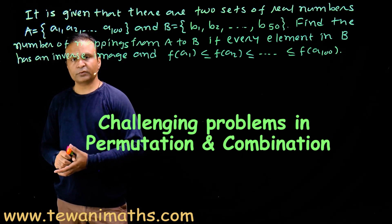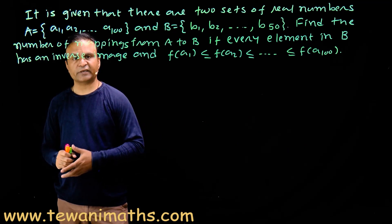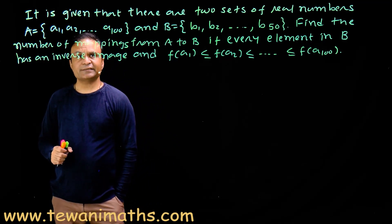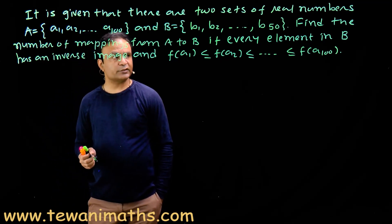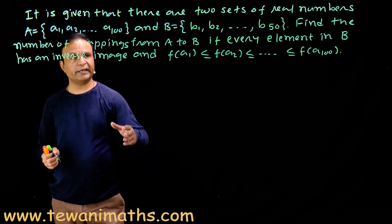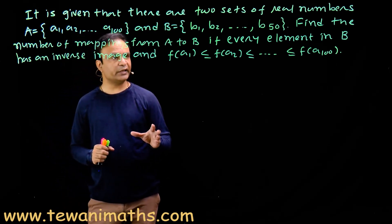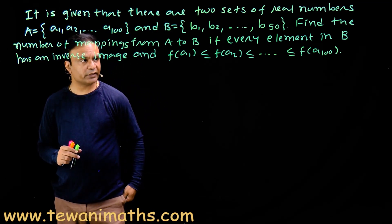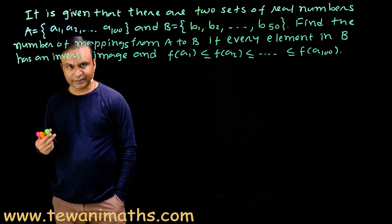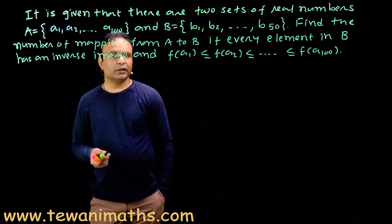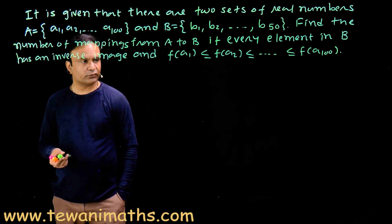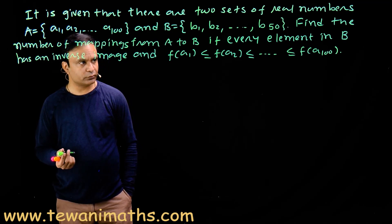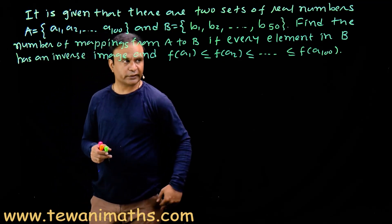This is a very interesting question from concepts of functions, that is mappings, and permutation combination. The question is: it is given that there are two sets of real numbers, set A and set B. Set A has 100 elements and set B has 50 elements. Find the number of mappings from set A to B if every element in B has an inverse image and f(A₁) ≤ f(A₂) ≤ f(A₃) ≤ ... ≤ f(A₁₀₀).